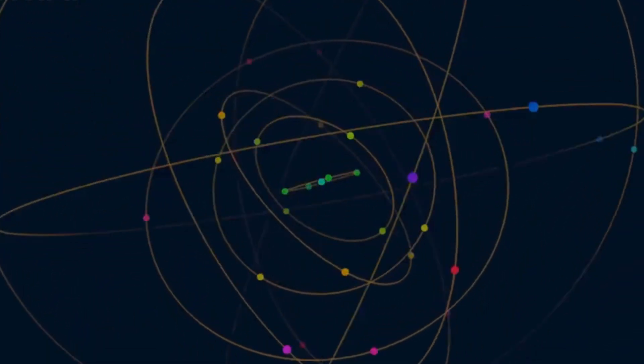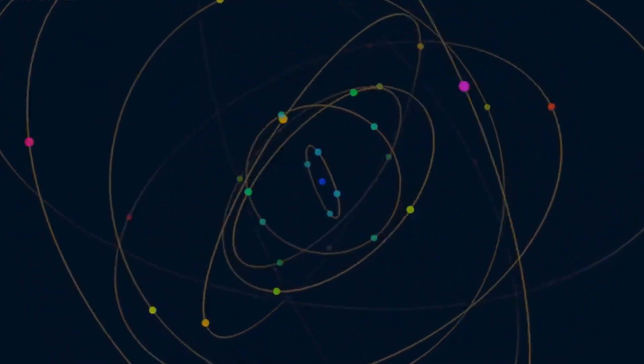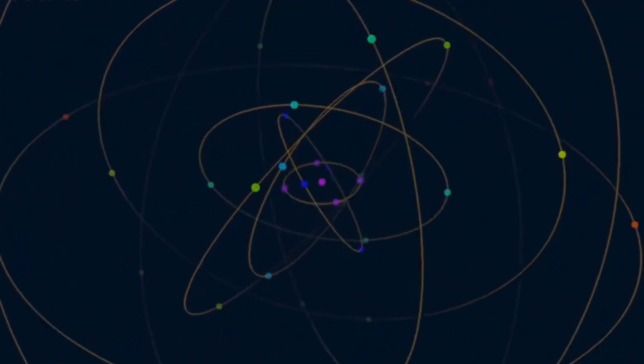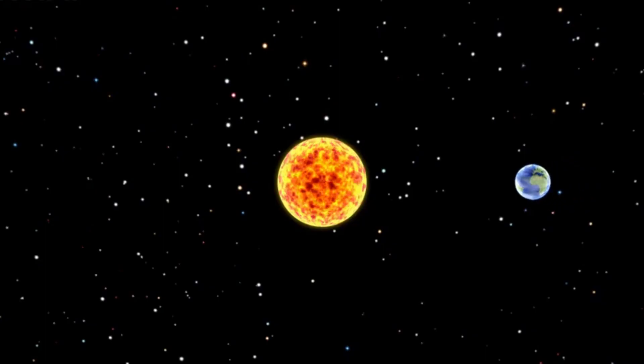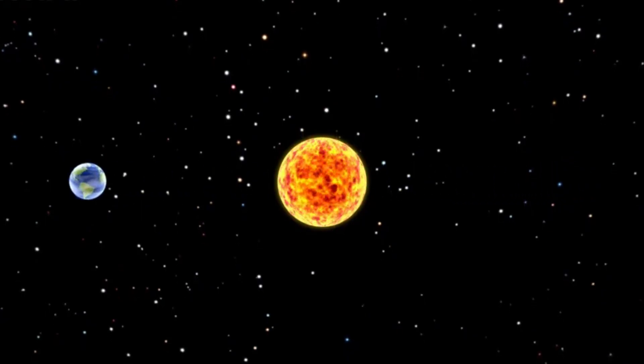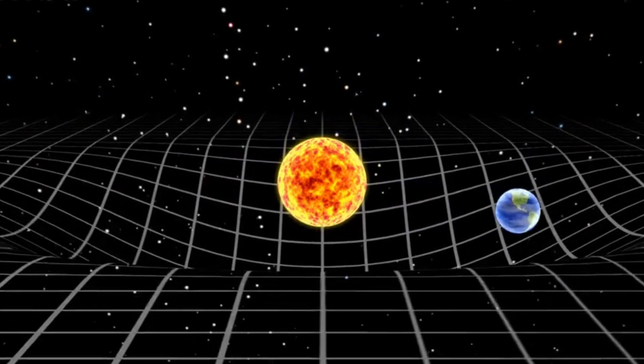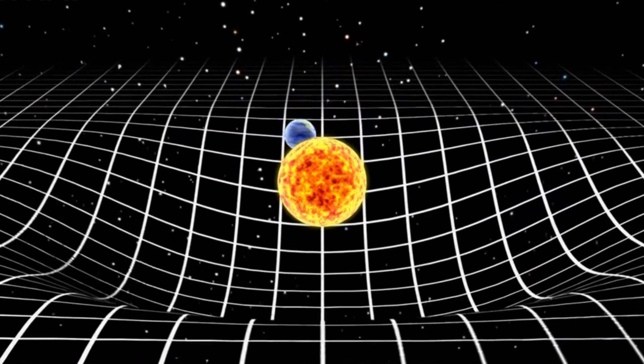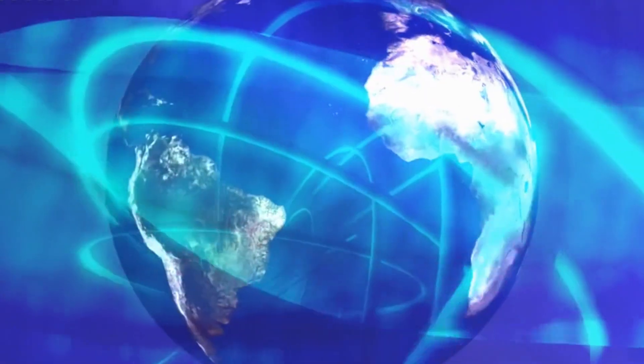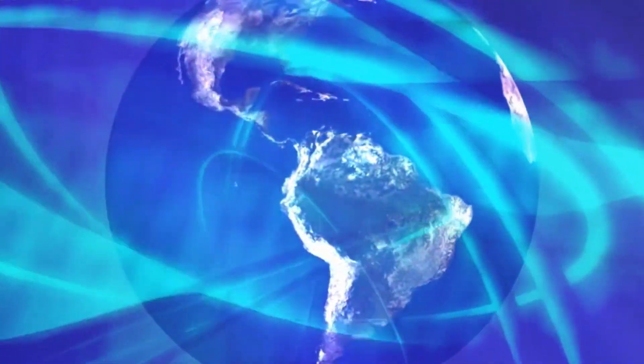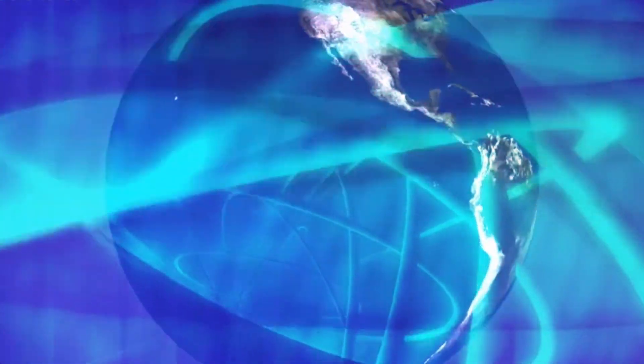One possible explanation for planets like LHS 3154b is a theory called gravitational instability. According to this theory, a planet might form when material in the disk collapses directly, instead of slowly gathering into a core. However, even this theory has trouble accounting for a planet of such mass without an enormous disk.